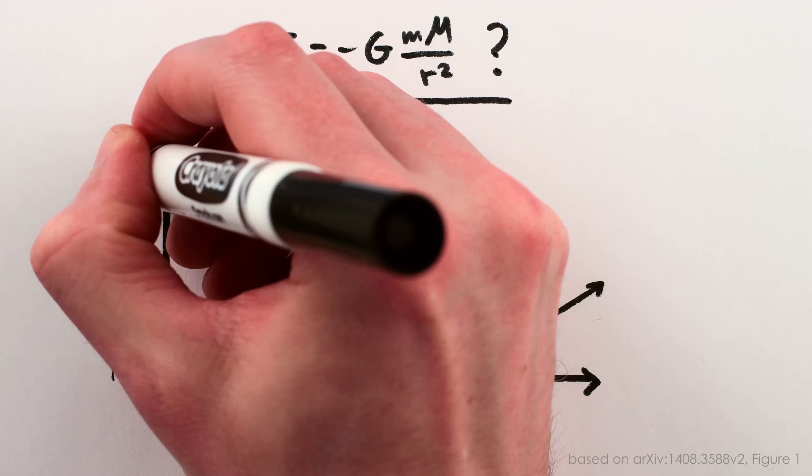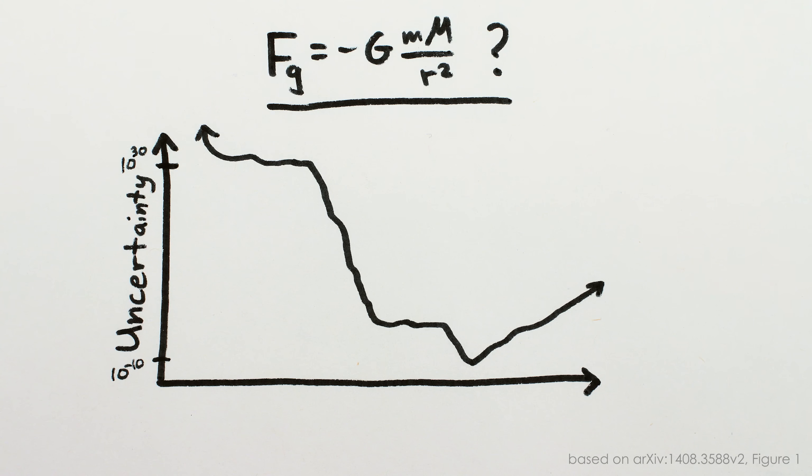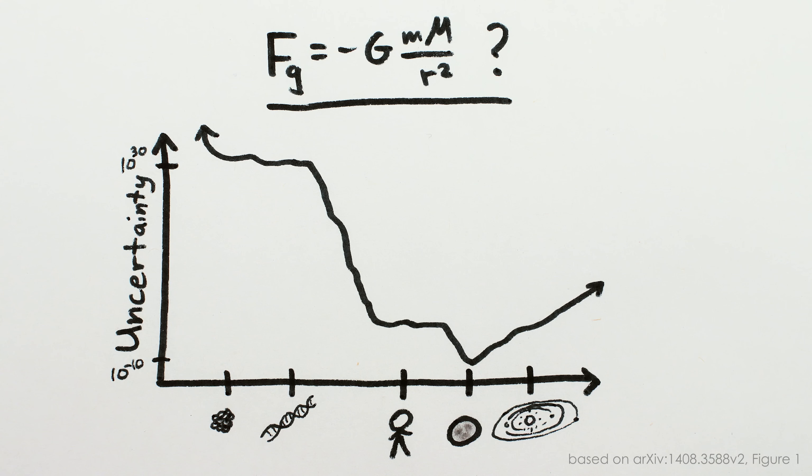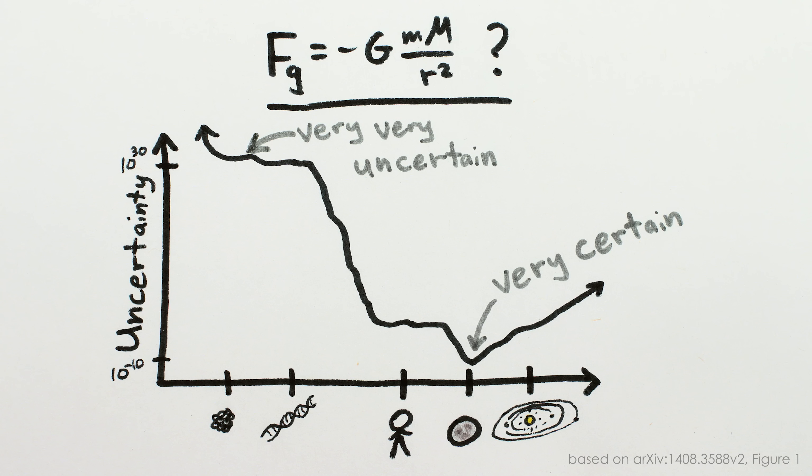Here's a plot showing how our uncertainty about Newton's gravitational law varies across a whole range of distances. Small distances on the left, big distances on the right. And the higher the line, the higher the uncertainty, which, you will notice, is very high on the left.